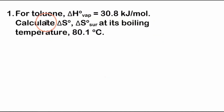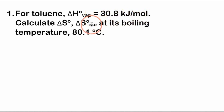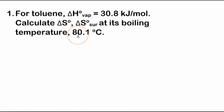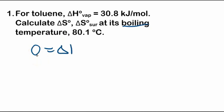Number one: for toluene, the standard change in enthalpy of vaporization — the circle means it's under standard state of one bar — equals 30.8 kilojoules per mole. The question asks us to calculate the change in entropy of the system and the change in entropy of the surroundings at its boiling temperature of 80.1 degrees Celsius. Since it's at the boiling temperature, the Gibbs free energy change is zero, giving us: zero equals delta H minus temperature times delta S. The superscripts indicate standard state at one bar.